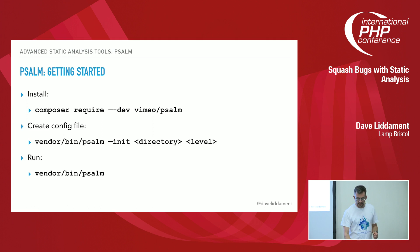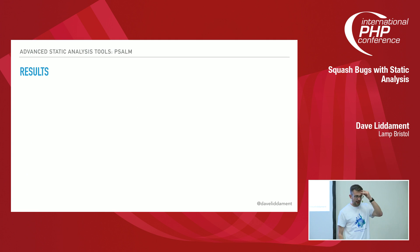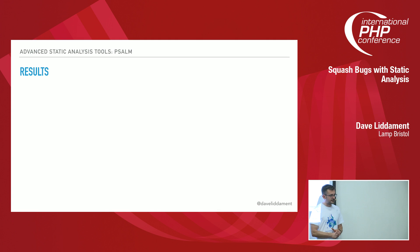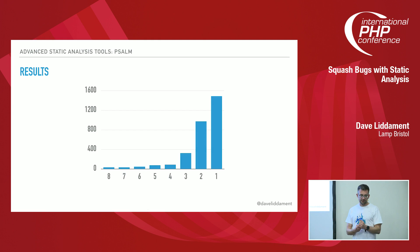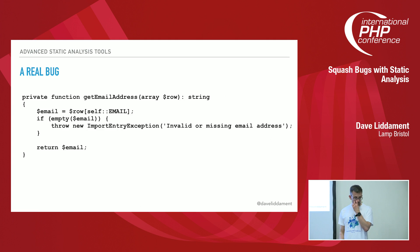And then you're probably going to cry at the results, as I did. I had some code I'd been working on at work — a couple of us had been working on it, it was reasonably well tested, developed using PHP Storm, we were pretty good at checking, and we did code review as well. I thought it was reasonably high quality. I thought they won't find much. And this is what Psalm found at each of the levels: at level 8 — its least strict level — it still found 30 issues, going all the way up to 1,500 at its most strict level. That was an upsetting day.